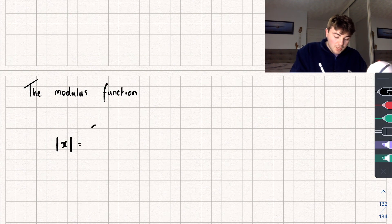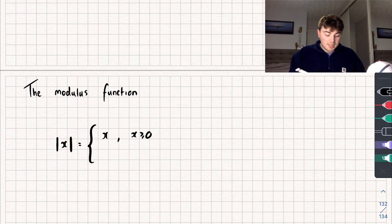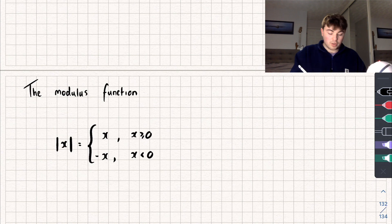Now this is going to be equal to the value of x itself if x is greater than or equal to 0, and it's going to be equal to negative x if x is strictly less than 0.